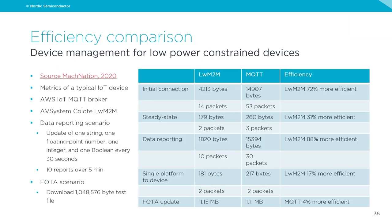Here is a quick efficiency comparison, with the source from Machination in 2020. On initial connection, LWM2M is 72% more efficient compared to MQTT. Steady state: 31% more efficient. Data reporting: 88% more efficient. Single platform-to-device message: 17% more efficient. FOTA update: 4% more efficient. LWM2M is a very good protocol to use for low-power constrained devices.